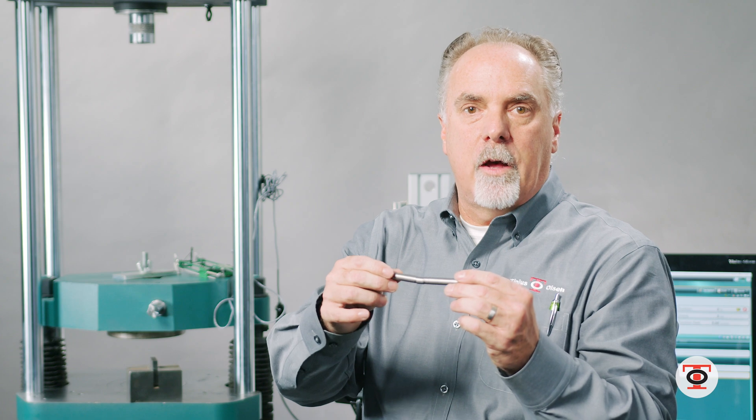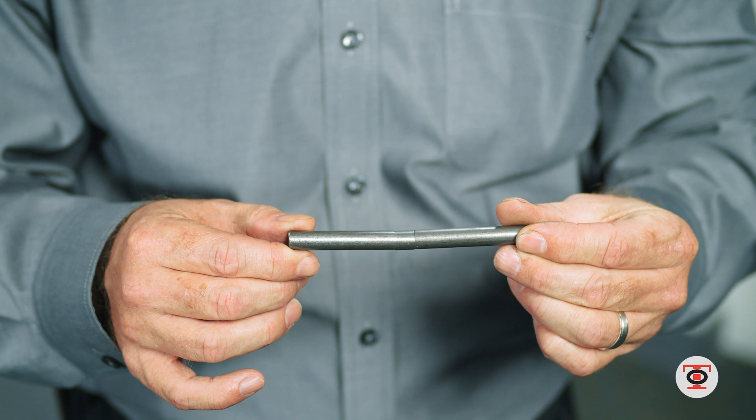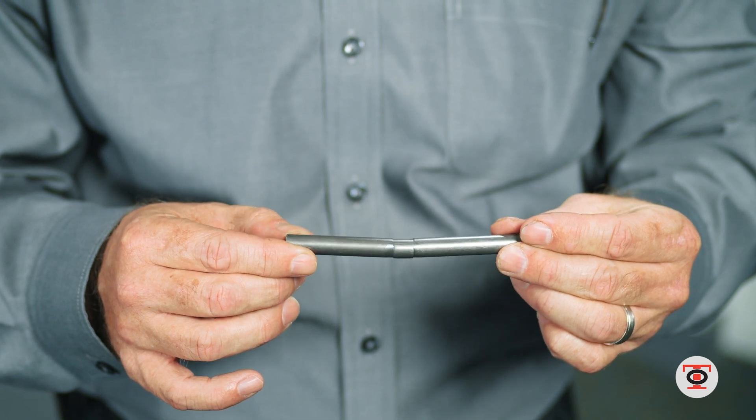Here's an example of a finished test where you can clearly see it sheared the specimen. It didn't damage the tooling. I'm ready to insert the next specimen and start the test over again for your productivity, repeatability, traceability.